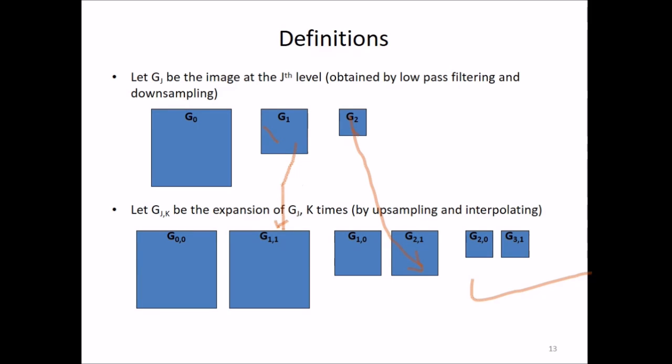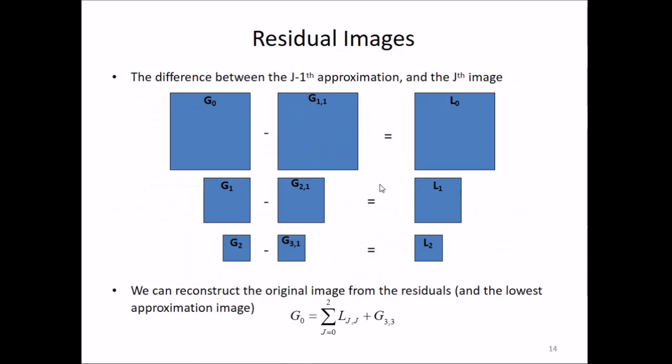The difference between the j-1 approximation and the jth image—that is, G_0 and G_1,1 (G_1 up-sampled once equals G_0)—this will be the residual image. Same for G_1: if G_2 is up-sampled once, this will be L_1. And if G_3 is up-sampled once, this is the residual. We can construct the original image from these residuals and the lowest approximation image.